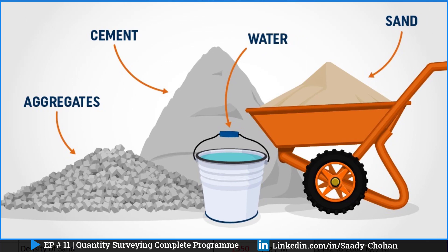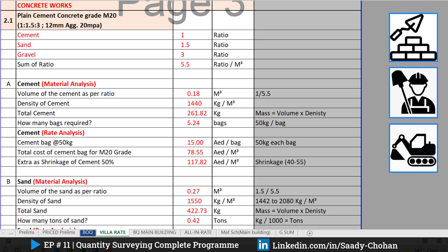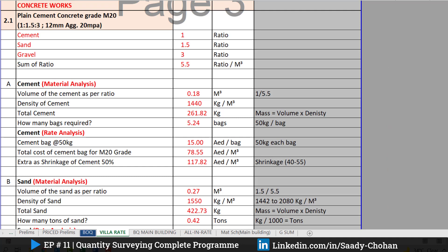The rate and material analysis sheet can be prepared in any format by considering material, labor, machinery, contractor's profit, and waste. The purpose of this calculation is to achieve the deliverable unit rate, no matter which sequence or process we follow. I'm going to explain in meters and UAE dirhams, but it doesn't matter — the calculation is a thought process.